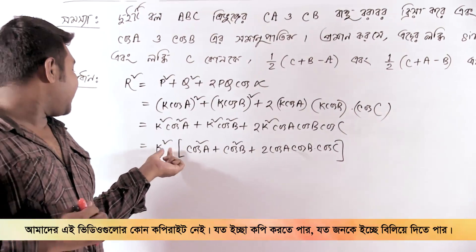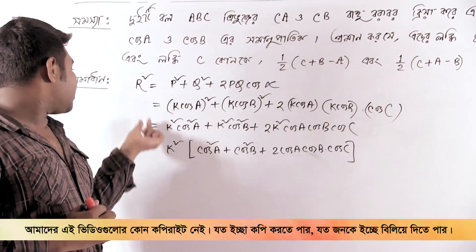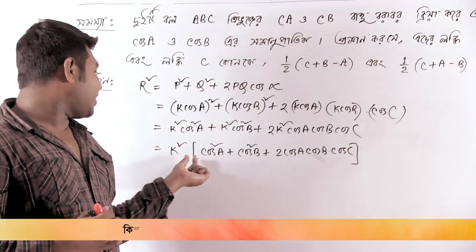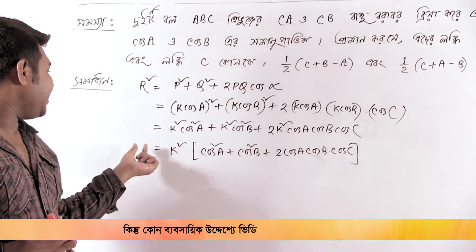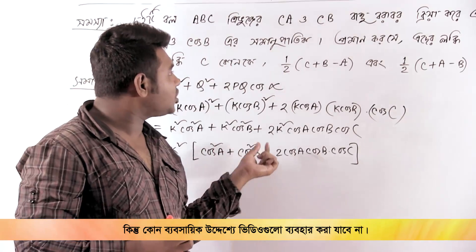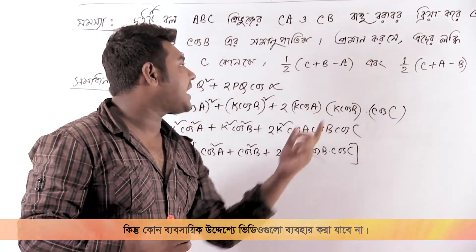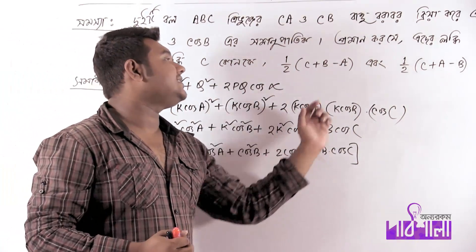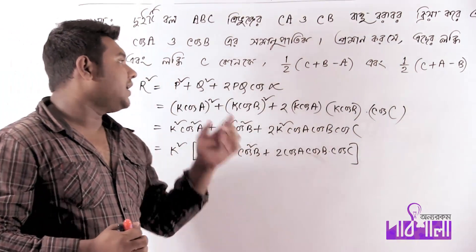It means r² is equal to k² into something. So that's a constant. That means r is equal to k into something. You can see this — here is the expression, meaning the science is converted. Here is the formula, which gives us another formula.